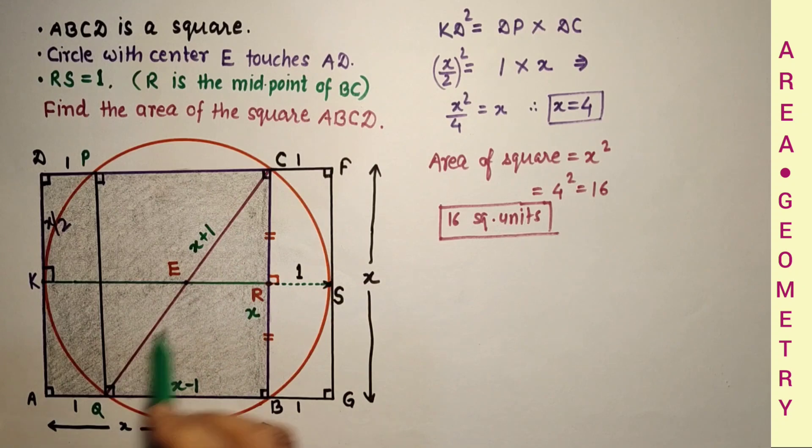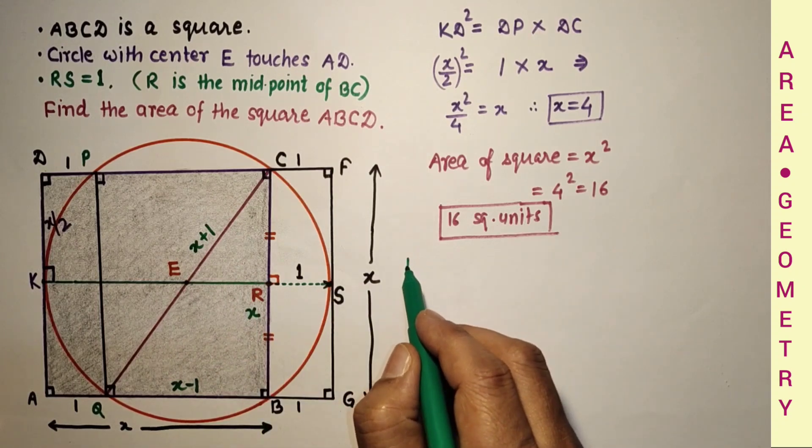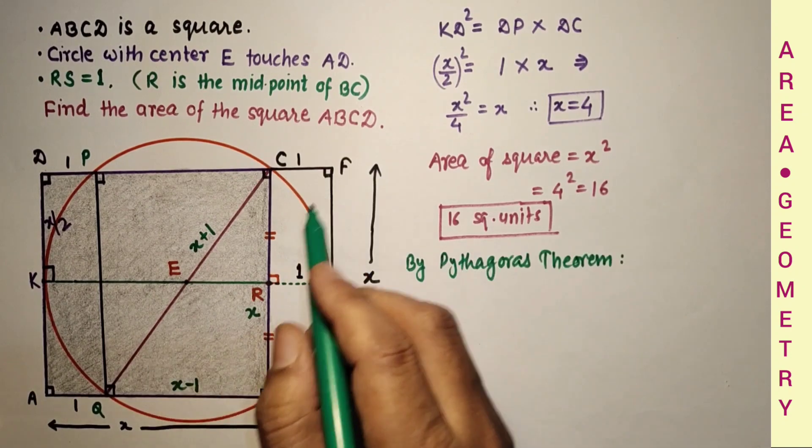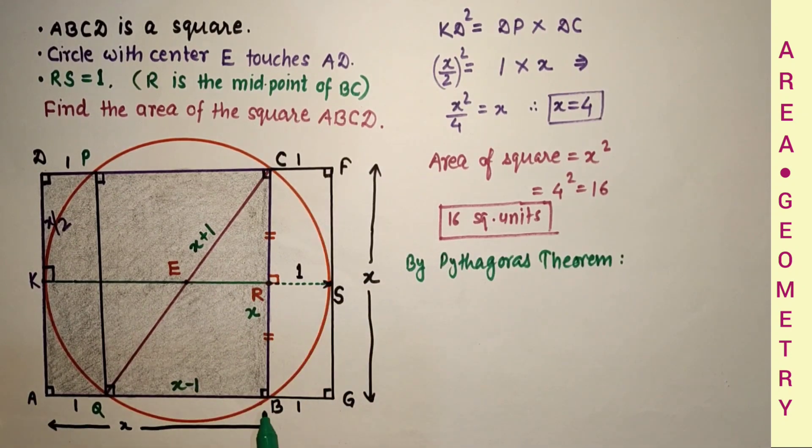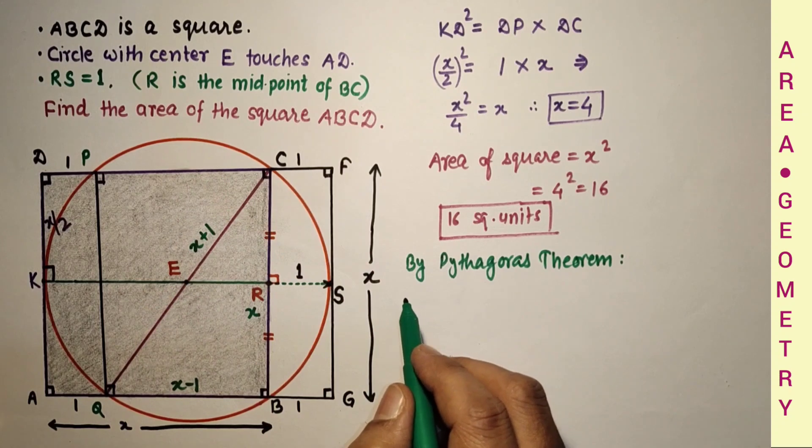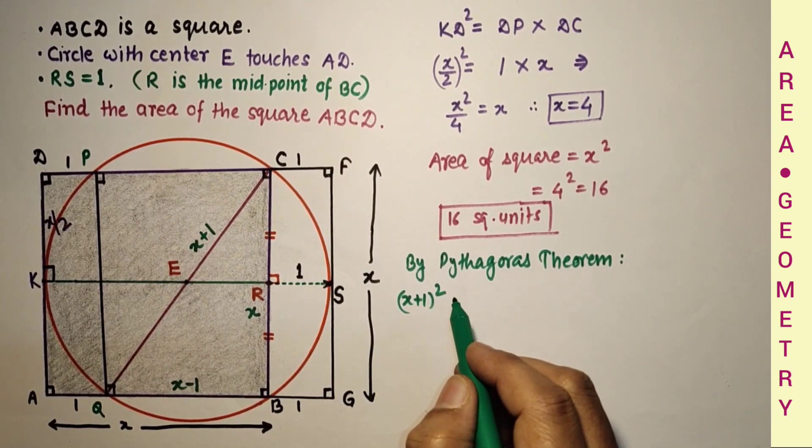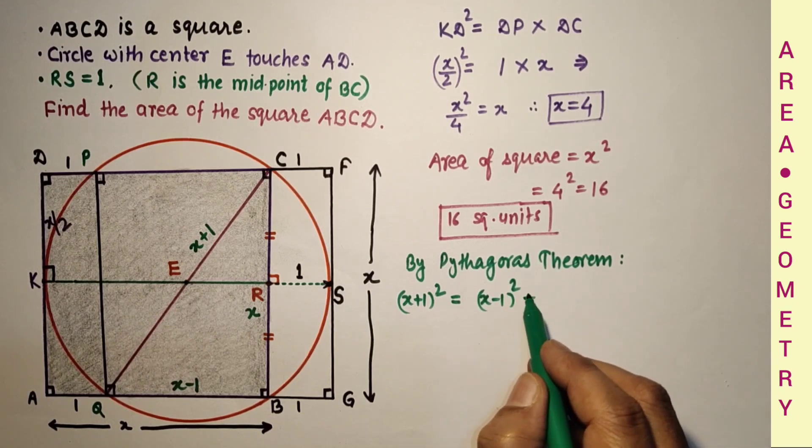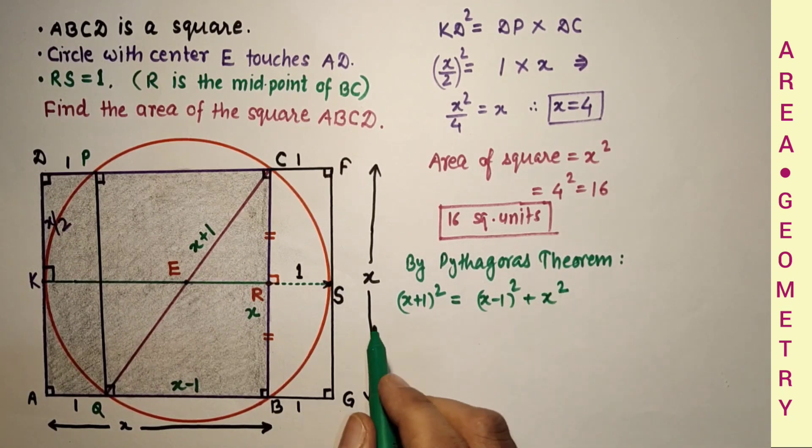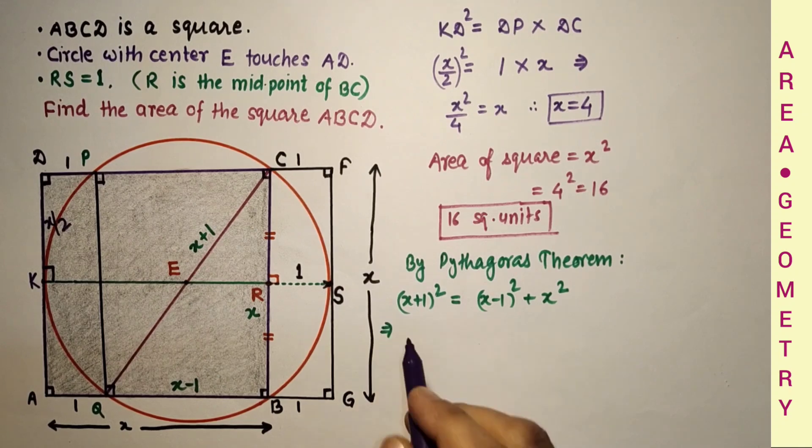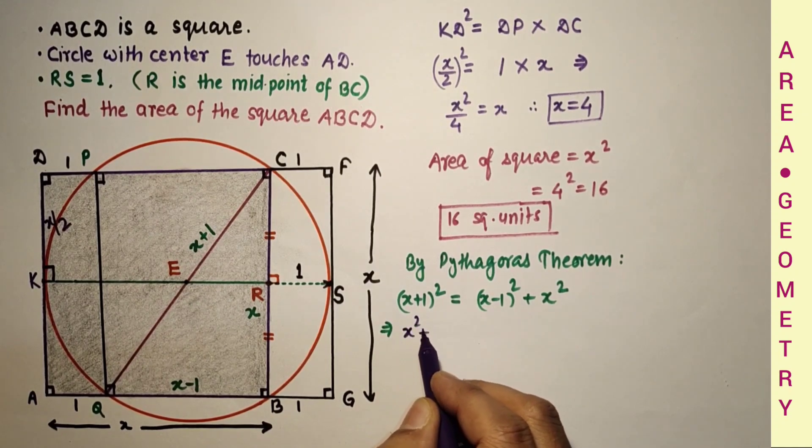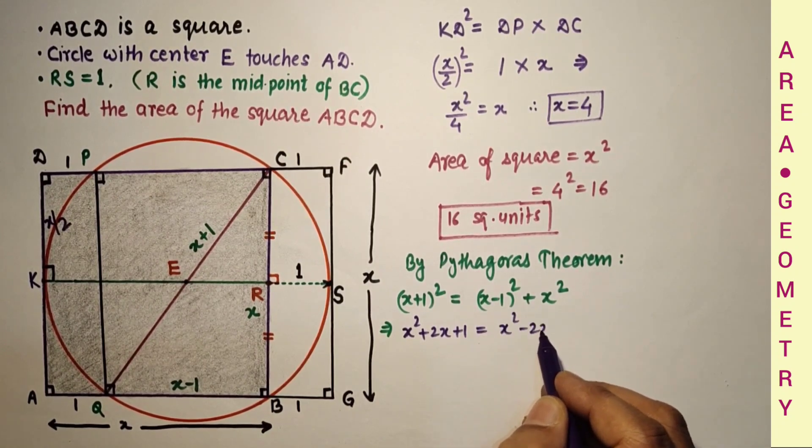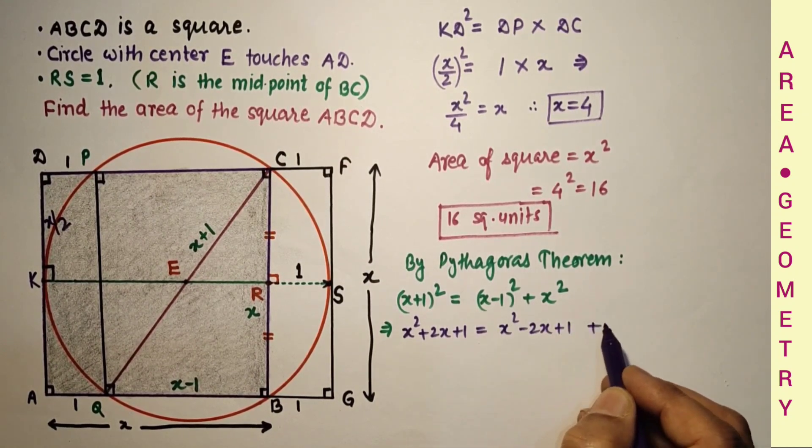So in this triangle, using Pythagoras theorem, QC square is equal to QB square plus BC square. Means X plus 1 the whole square is equal to X minus 1 the whole square plus X square. If we simplify, we will get X square plus 2X plus 1 equals X square minus 2X plus 1 plus X square.